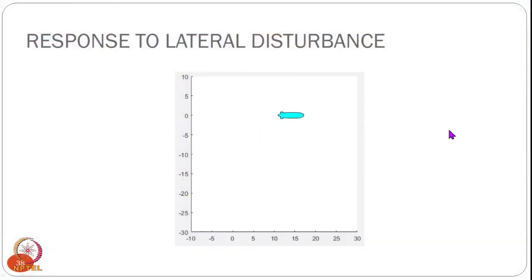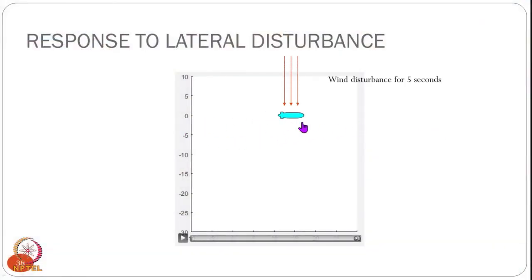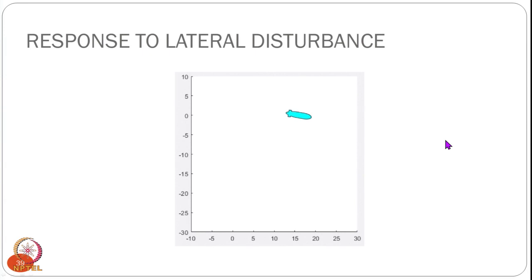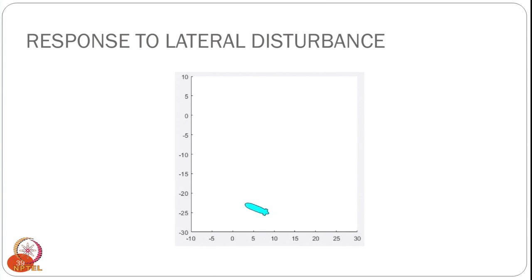A simulation shows the airship moving straight, then experiencing a wind disturbance for just 5 seconds. After the wind disappears, the airship enters a steady rate of turn — it basically turns in a circle forever. This is the direct result of the airship being directionally unstable, and it continues unless a corrective control action is taken.